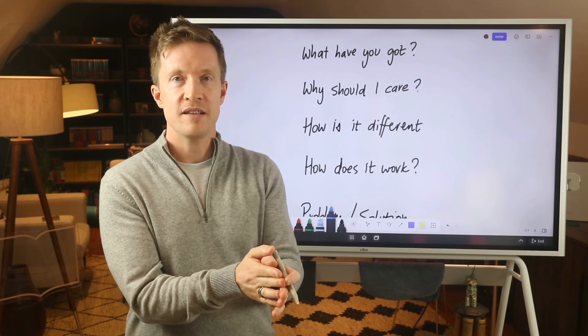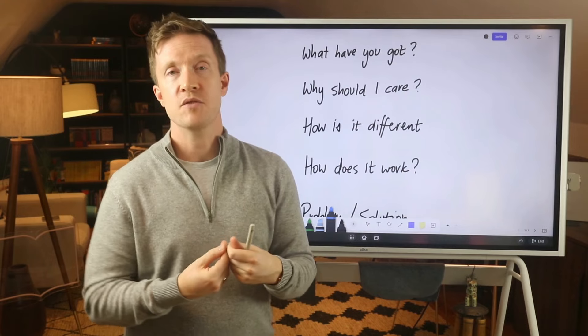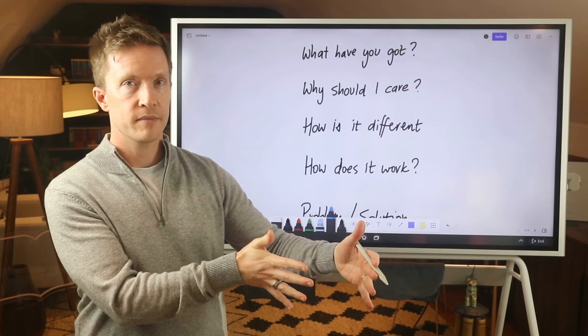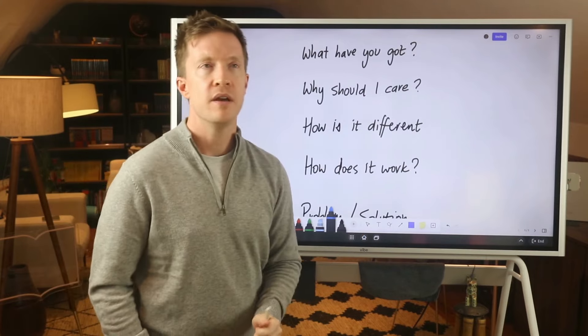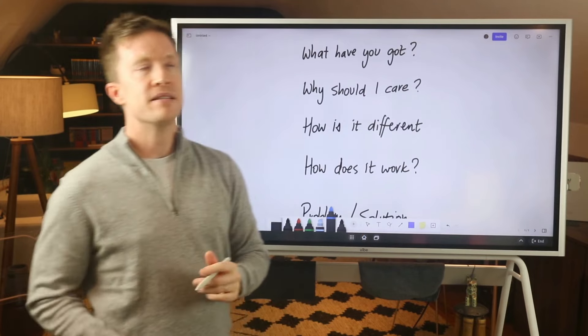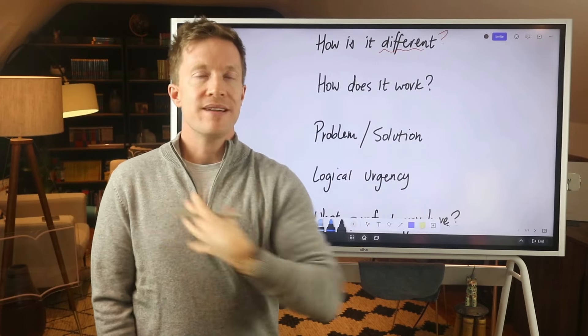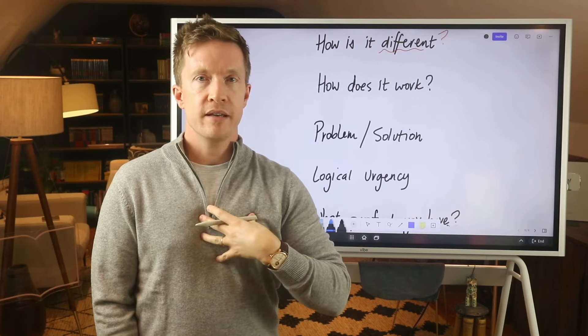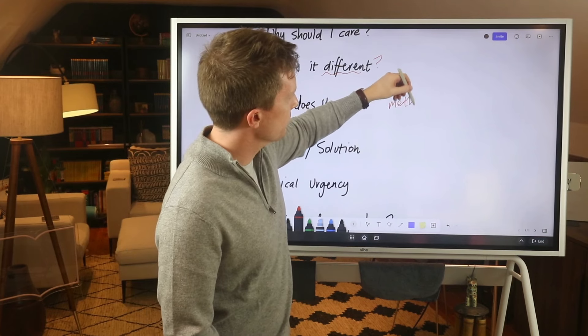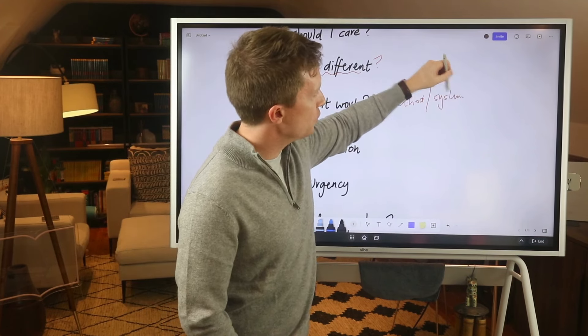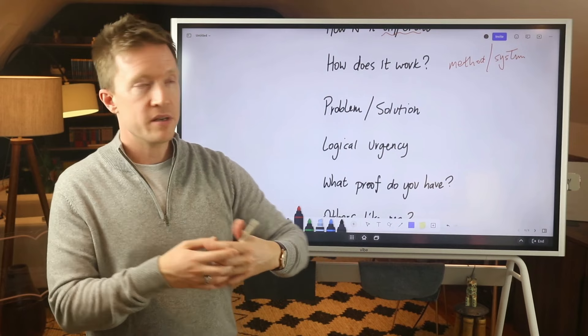That basic value proposition there is so essential that you clearly define what that is. How does it work? This speaks to the logical side. People can love you. That's an emotional thing, but they also want to know how it works logically. You've got to explain your method or system. You've got to satisfy the logical part of the brain. Problem solution speaks to what the person is trying to solve.